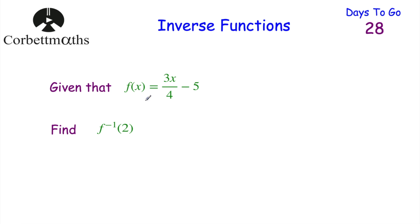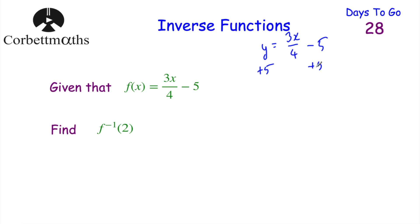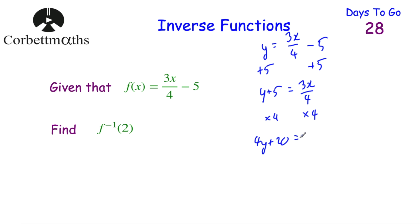Let's look at one last question. f(x) = (3x/4) − 5, and we've been asked to find f⁻¹(2). Press pause now and do that. To find the inverse function, we let y = (3x/4) − 5. We want to make x the subject, so let's add 5 to both sides: y + 5 = 3x/4.